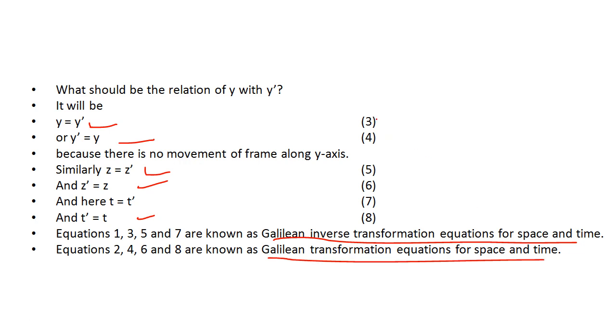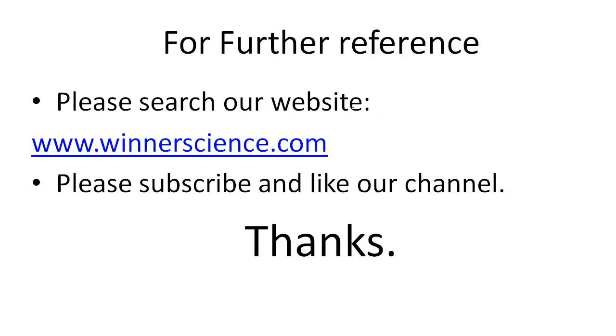These are the Galilean transformation equations for space and time. Space means x, y, z axis and time is t axis. For further reference, please search our website venascience.com. Please subscribe and like our channel. Thank you.